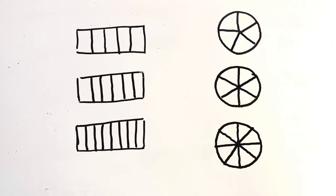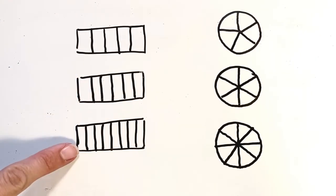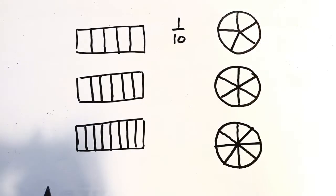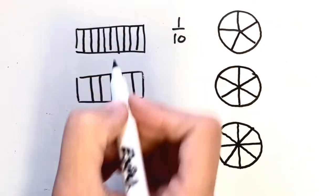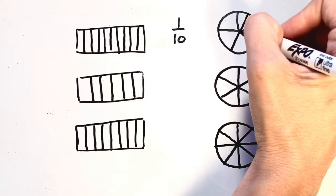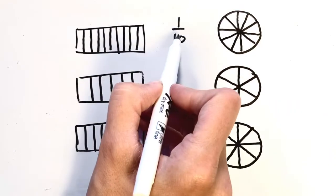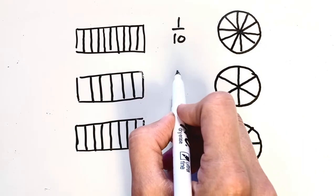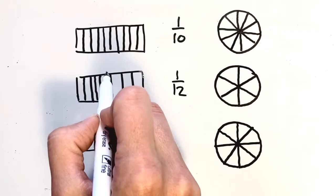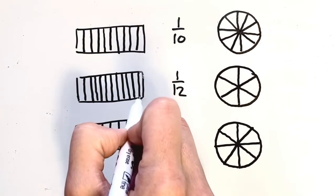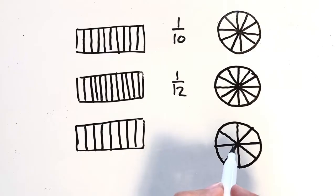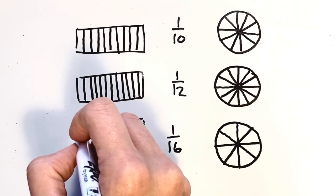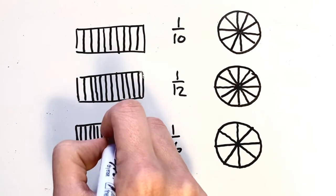In this video we've been focusing on some common denominators like fifths, sixths, eighths, fourths, and thirds. But remember, if you want to draw fractions with larger denominators — like one tenth — you can just draw fifths and then cut each of the pieces in half. This works on bar models and also on pie models. If you want to draw twelfths, start by drawing sixths and then cut each sixth in half. And for sixteenths, start by drawing eighths on the bar model or pie model, and cut each piece in half.